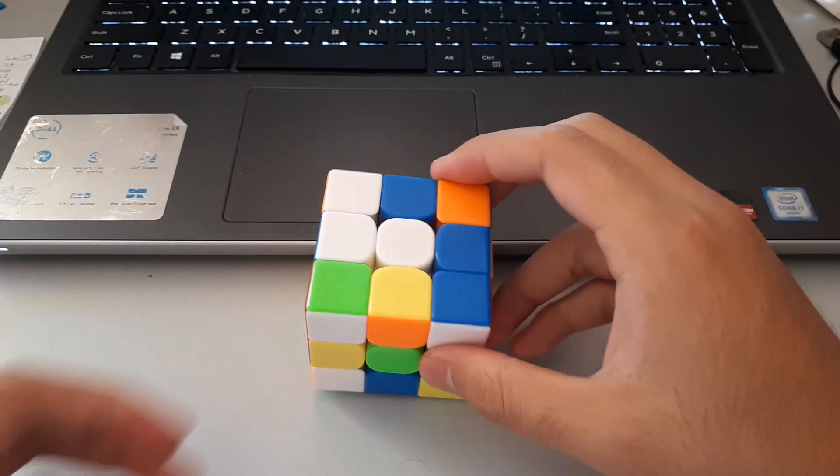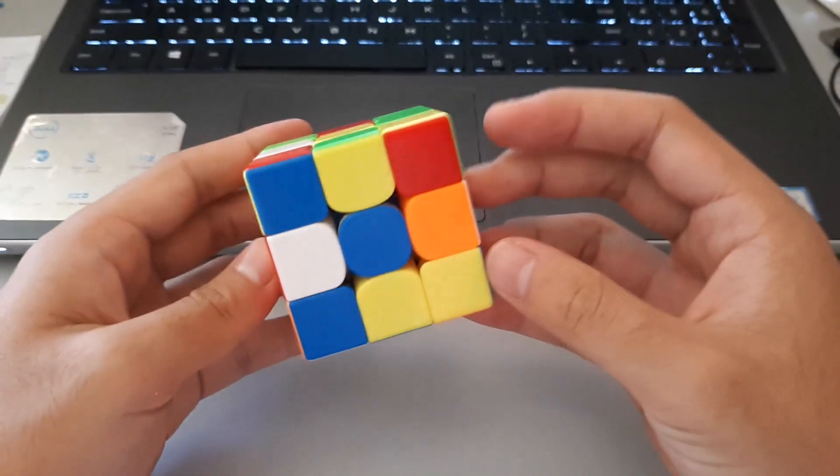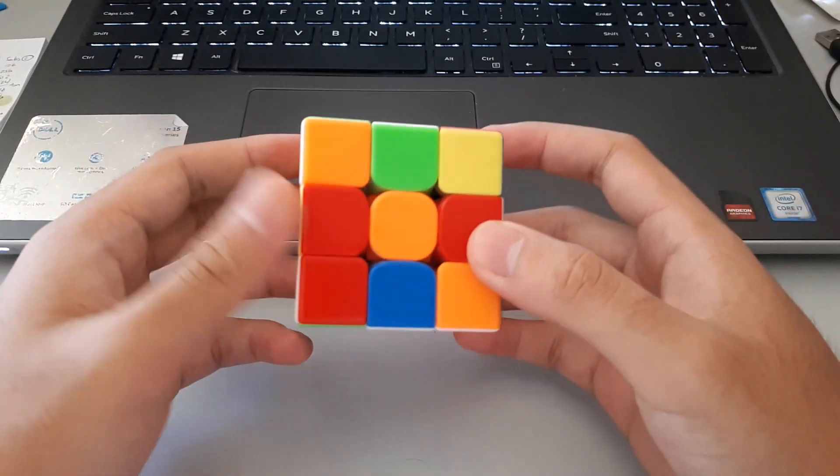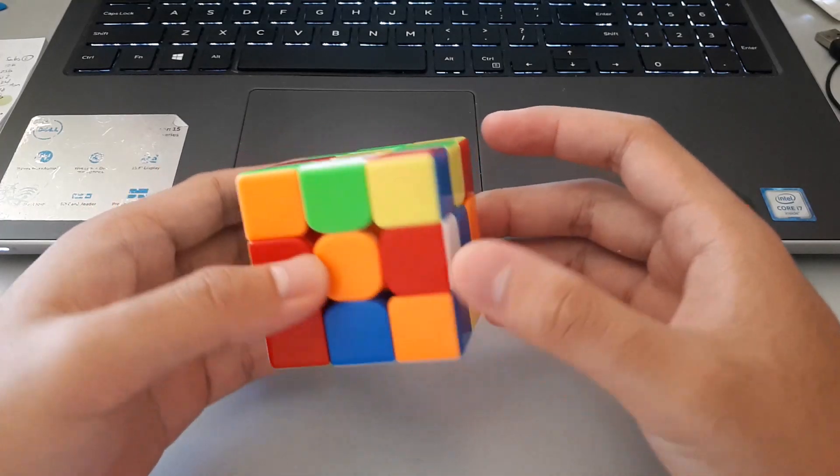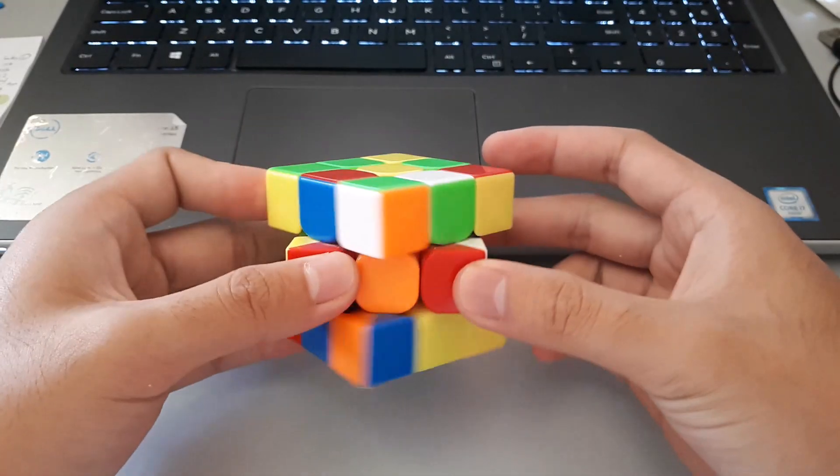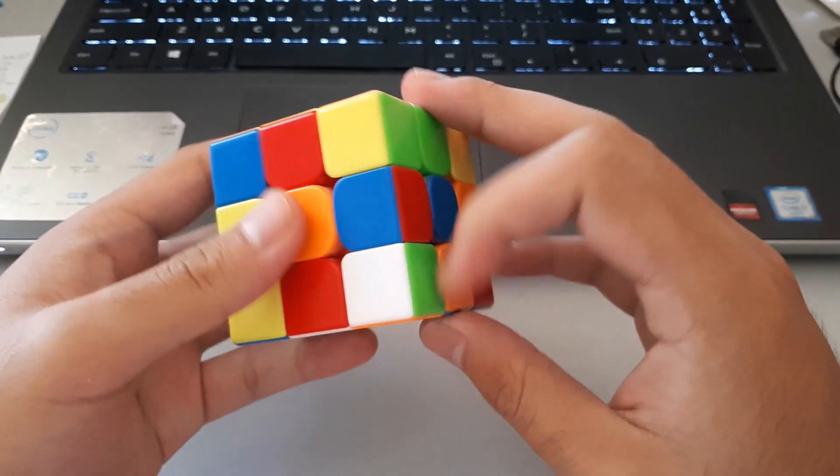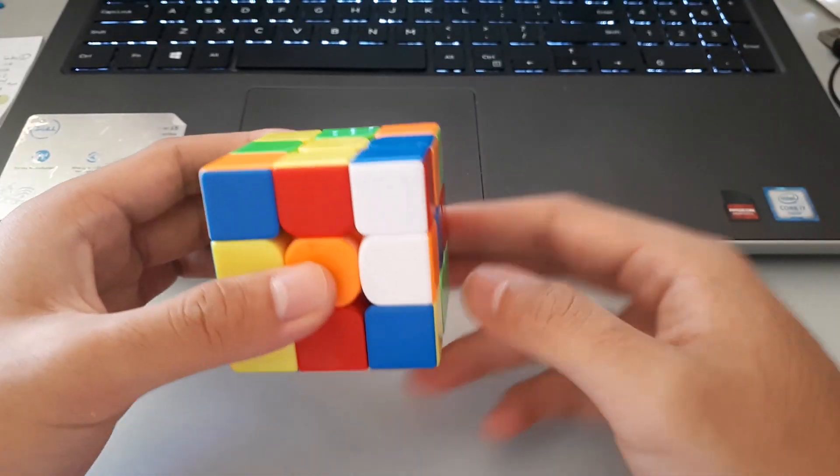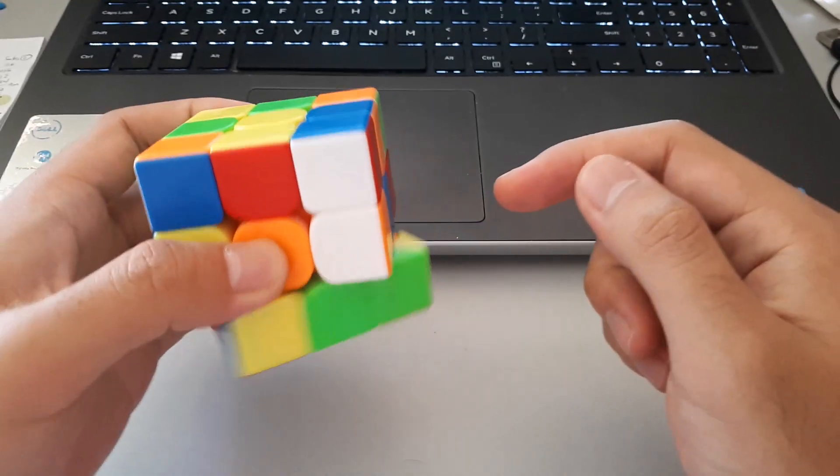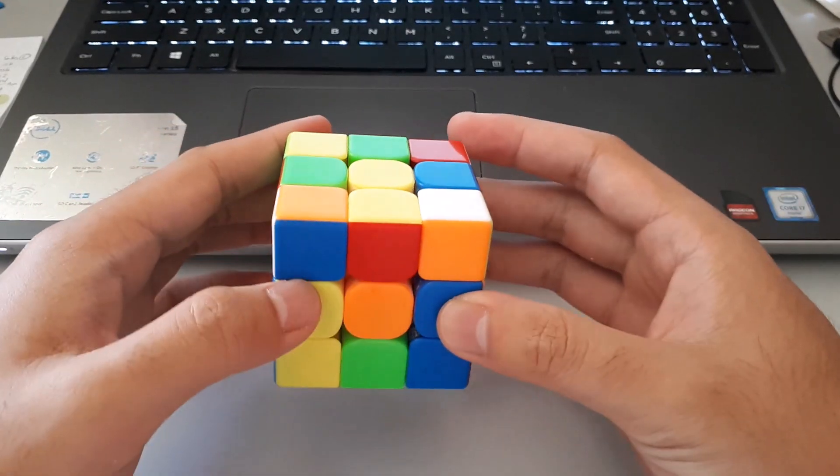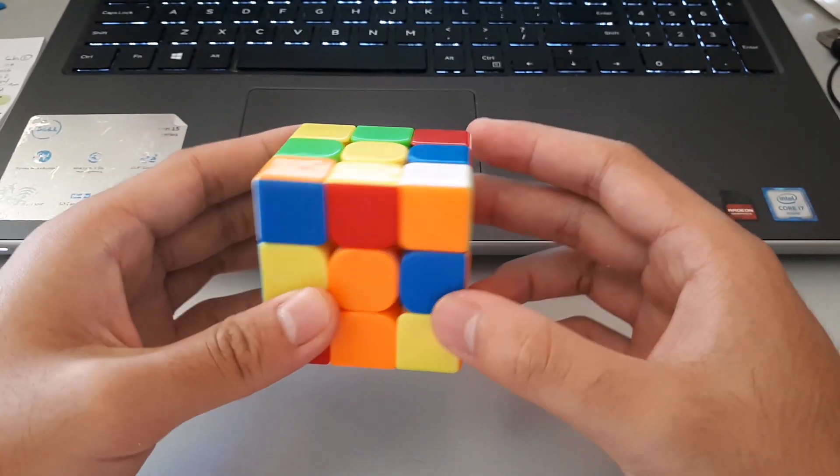So going into the third scramble, for this one I noticed that - okay, so if I do a U prime, D prime to begin, I can set up red and green for inserts relative to each other, then I'll probably insert orange here like that, and then align the cross.